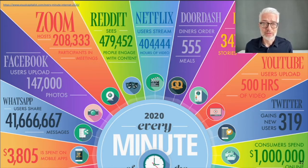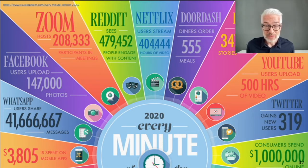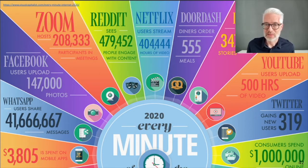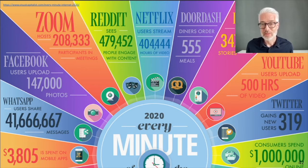Even on Facebook, 147,000 photographs are uploaded every minute. What is really impressive is Netflix, right in the center: users stream 400,000 hours of video per minute — simply incredible. On Instagram, more than 300,000 user stories are posted per minute. Also interesting: consumers spend one million dollars per minute online — that's huge.